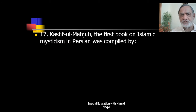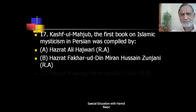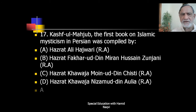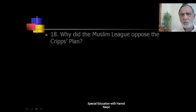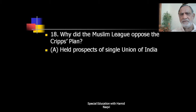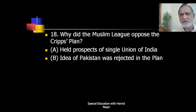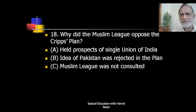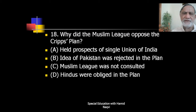Kashf al-Mahjub, the first book on Islamic mysticism in Persian, was compiled by Hazrat Ali Hajwari. Why did the Muslim League oppose the Cripps Plan? Options: it held prospects of a single union of India; the idea of Pakistan was rejected in the plan; Muslim League was not consulted; or Hindus were obliged in the plan. The correct answer is B — the idea of Pakistan was rejected in the plan.